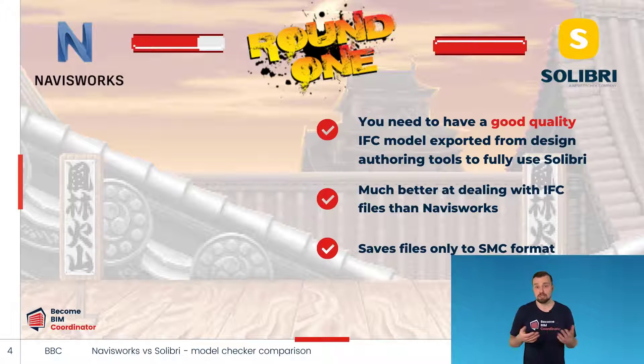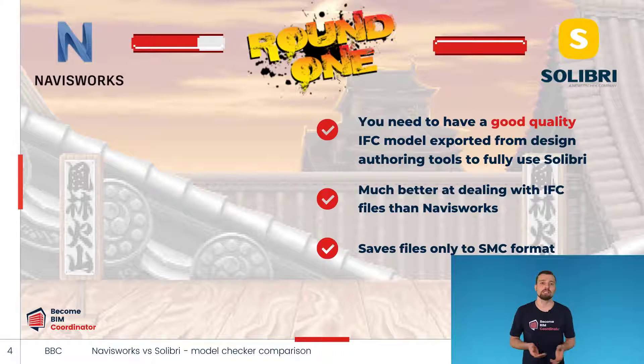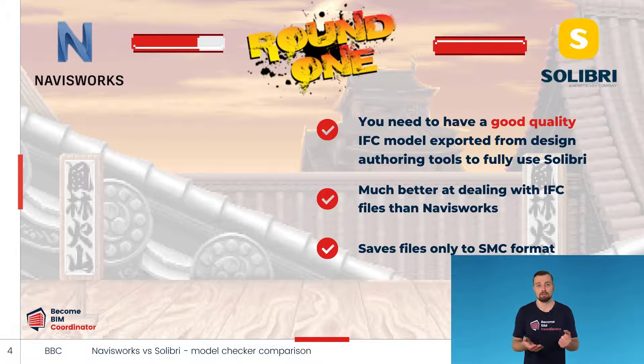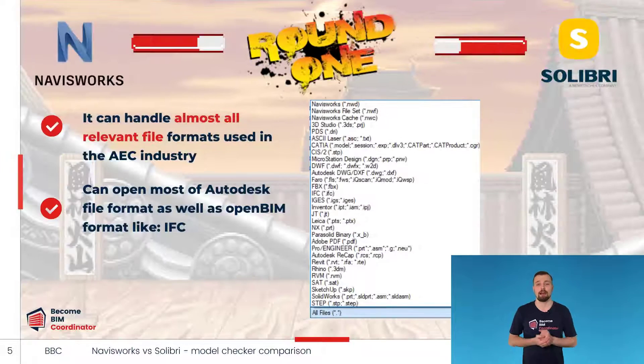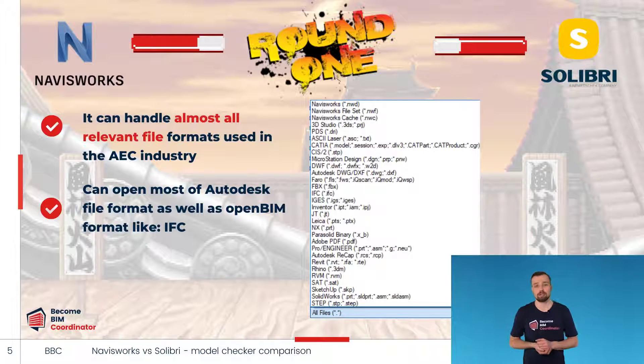Solibri also has limitations when saving files. It generally saves files to only one SMC format.